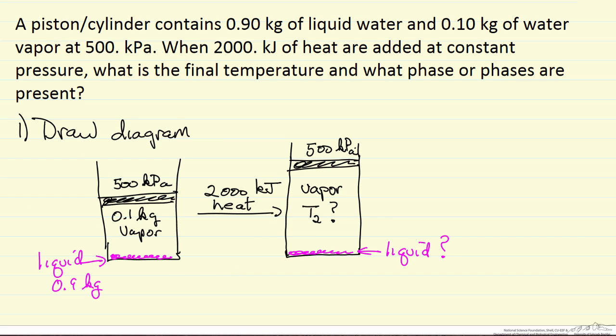So notice that when drawing the diagram one of the things that's important is to list all the knowns, and then the unknowns. In this case we don't know the temperature, and we don't know if liquid is present, so we don't know if we have two phases or all vapor, since as we're adding heat at constant pressure we're going to vaporize some liquid at least. So this is the first step, we have knowns, unknowns, and a diagram.